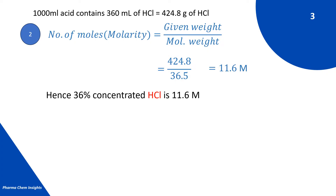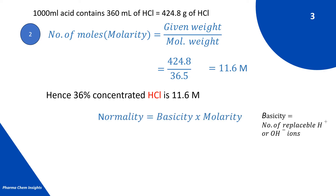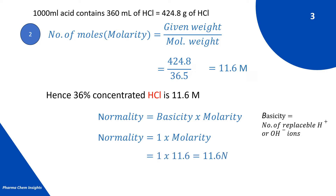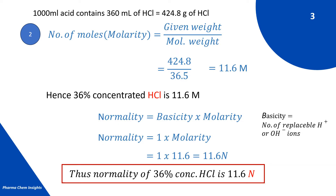For calculating normality, we use the formula: normality = basicity × molarity. Basicity is equal to the number of replaceable H⁺ or OH⁻ ions. In the case of HCl, the number of H⁺ ions is 1. So normality = 1 × 11.6 = 11.6 normal. Thus, the normality of 36% concentrated HCl is 11.6 normal. Just remember the number 11.6 normal — you don't need to calculate all this each time.